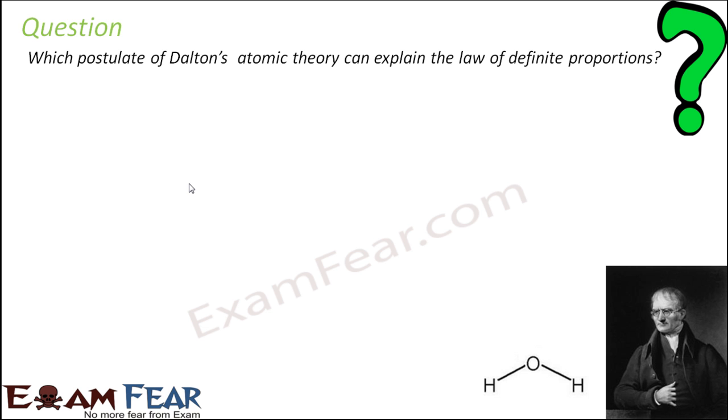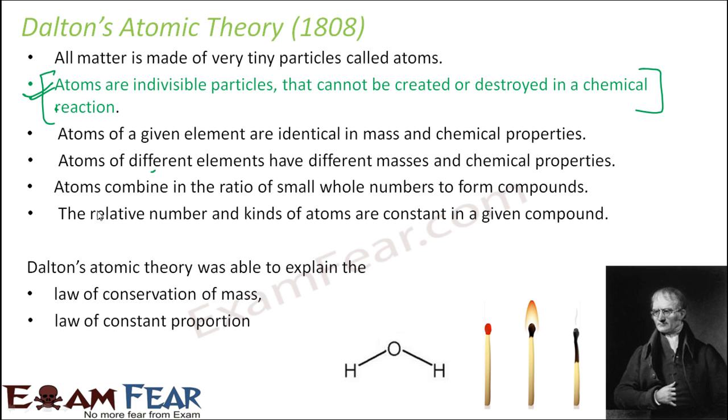The next question. Which postulates of Dalton's atomic theory explain the law of definite proportion? That is the relative number and the kind of atoms are constant in a given compound. This explains the law of definite proportion. We have seen the sixth postulate that the relative number and the kind of atoms are constant in a given compound. So if you see here the sixth postulate, this is the one which talks about laws of definite proportion. The relative number and the kinds of atoms are constant in a given compound.